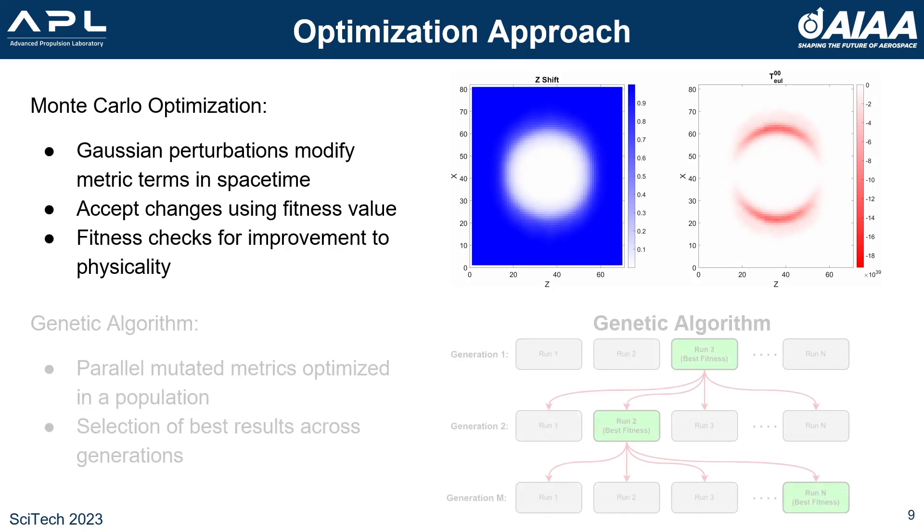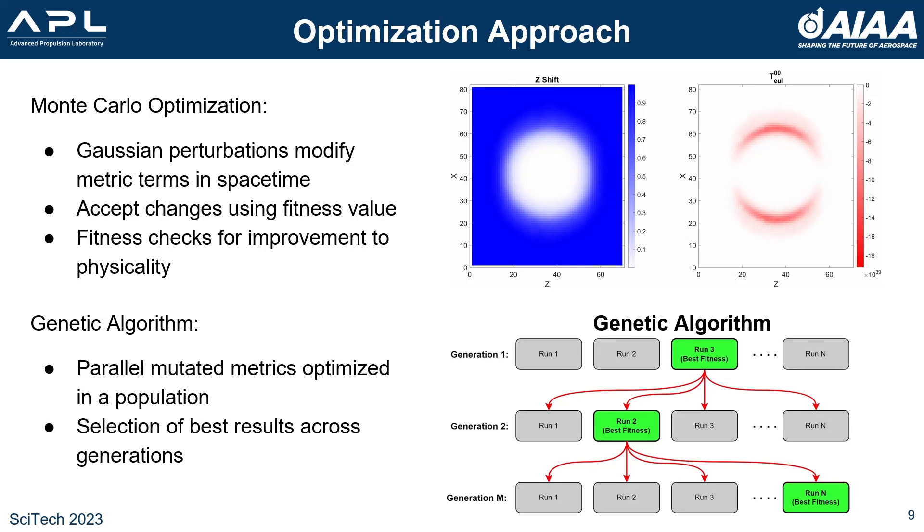These perturbations can be run in parallel using a genetic algorithm. The population of metrics undergoes random starting mutations and are then optimized in parallel. After a certain number of optimization iterations, the best metric from each population is taken and mutated again to create the next population for optimization. This parallelization approach makes it much faster than running a single optimization, and the random mutations help it avoid local minima.